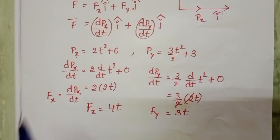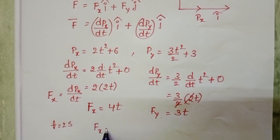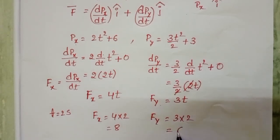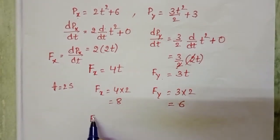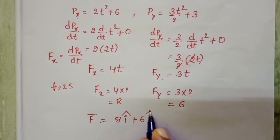We have to find the force acting on the body at t equals 2 seconds. When time equals 2 seconds, Fx equals 4 into 2, that is 8. And Fy equals 3 into 2, that is 6. So F-bar equals 8i-cap plus 6j-cap.